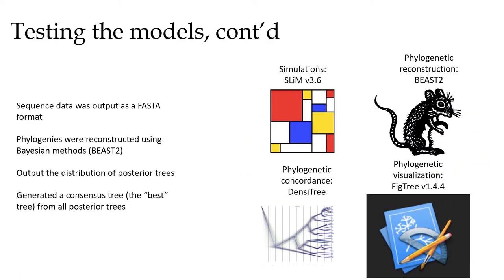And so this is what I did. I output the sequence data as a FASTA format. For those of you that are familiar with sequence data and the different formats of sequence data, it's basically just a very simple format of ATCs and Gs in rows. And then I constructed those phylogenies using Bayesian methods. I output the distribution of the best posterior trees. And then I generated a consensus tree, i.e. you can think about it as the best tree from all the different posterior trees that were estimated. So for those of you that are interested, I performed the simulations using SLIM version 3.6. I did the phylogeny reconstruction in Beast 2. This is a very popular Bayesian phylogenetic program. I analyzed the amount of phylogenetic concordance using a program called DensyTree. And then we are going to visualize our phylogenies using this very nifty program, FigTree.